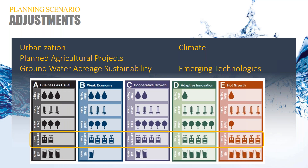We came down with five primary adjustments to make in each basin, if applicable, across the planning scenarios, with the goal of adjusting our agricultural diversion demand accordingly. Urbanization, planned agricultural projects, and groundwater acreage sustainability adjustments are really hitting on acreage adjustments. Climate is going to be applied directly to the irrigation water requirement. And emerging technologies really hits on that system efficiency.